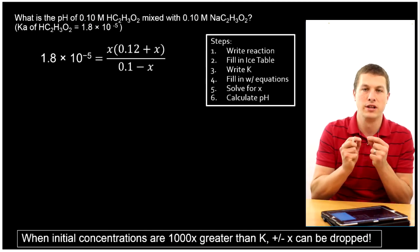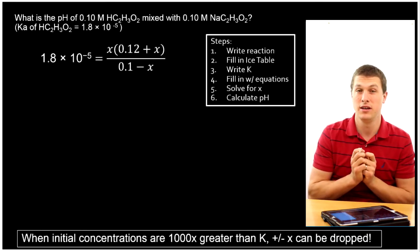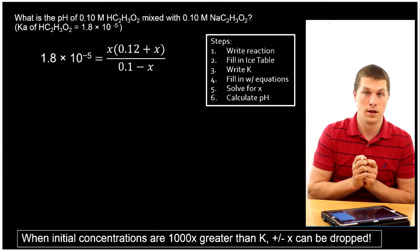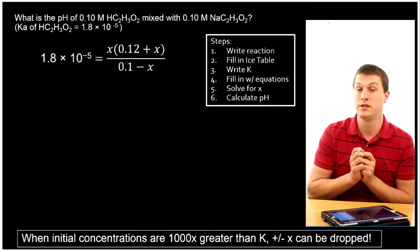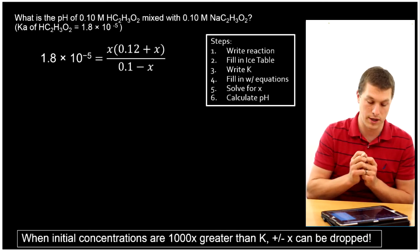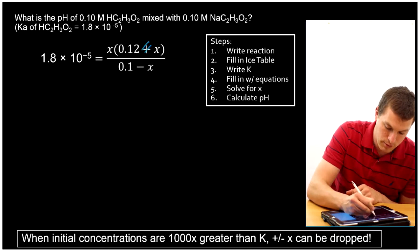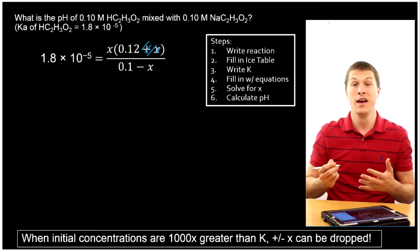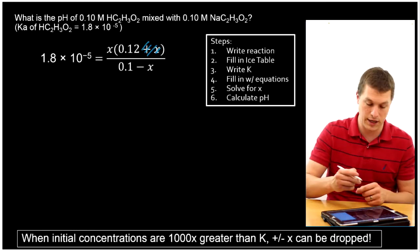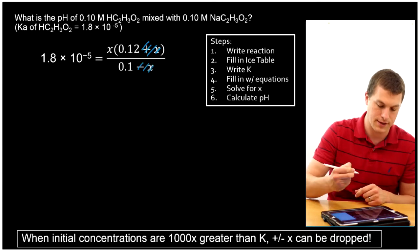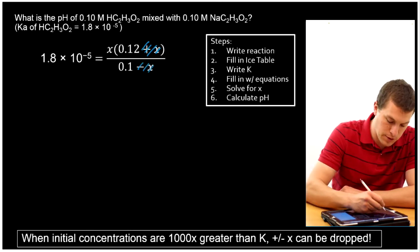The idea here is if I'm adding a really small number, which X is going to be if my equilibrium constant is small, then I can just ignore it. If you have a million dollars in your bank and I give you 0.002 pennies, you won't even notice. And so we can drop where we've added X. If you have a million dollars and I take away 0.002 pennies, you're not going to notice. So I can get rid of minus X.